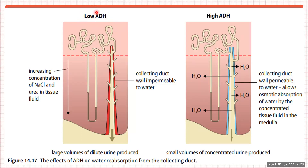In summary: with low levels of antidiuretic hormone, large volumes of dilute urine are produced because water is not reabsorbed and the collecting duct wall becomes impermeable. With higher concentrations of antidiuretic hormone, the permeability of collecting ducts and distal convoluted tubules to water increases, water is reabsorbed into the plasma, and small volumes of concentrated urine are formed.